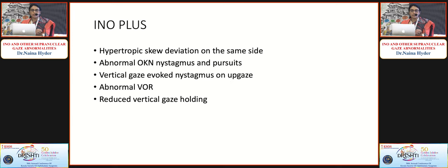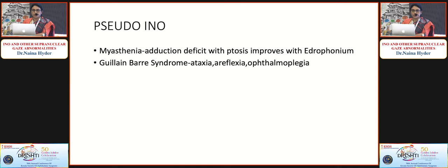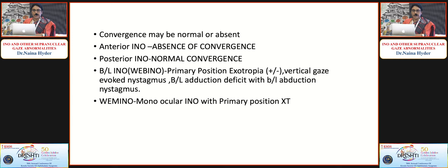For postgraduate interest: INO-plus lesions include hypertrophic skew deviation on the same side with abnormal OKN and vertical gaze abnormality. Pseudo-INO can occur in myasthenia gravis and Guillain-Barré syndrome. Convergence may be absent in anterior INO — where the lesion is in the midbrain — or normal in posterior INO, where the lesion is in the pons. Bilateral INO (WEBINO) presents with primary position exotropia, bilateral adduction deficit, bilateral abduction nystagmus, and vertical gaze-evoked nystagmus.